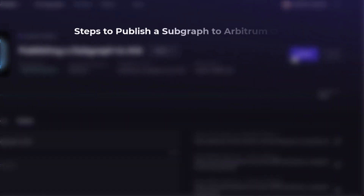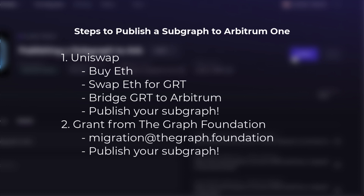Now let's look at the steps to publish a subgraph to Arbitrum Mainnet, officially named Arbitrum 1. The first step is to get GRT. There are many ways to get GRT — let's go through two. The first option is Uniswap, where you'll buy ETH on Ethereum Mainnet and then swap the ETH for Ethereum Mainnet GRT. You'll then bridge your GRT to Arbitrum and publish your subgraph through Subgraph Studio, just as we did before. The second option is through a grant from the Graph Foundation. You can reach out to migration@thegraph.foundation and they'll help walk you through applying so there's no upfront cost to get your subgraph published on the Graph Network.